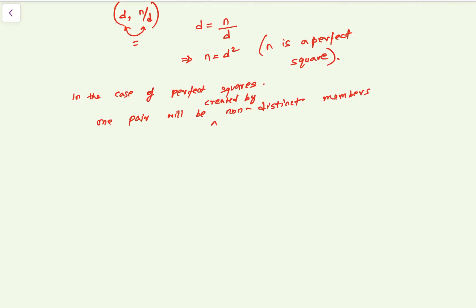So let me illustrate that by an example. Suppose n is 36, then if I pair them: 1, 36; 2, 18; 3, 12; 4, 9; 6, 6. So see, each of the pairs have distinct members except the last one which contains non-distinct members.